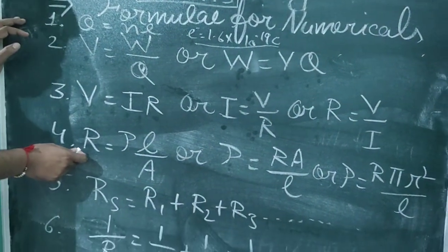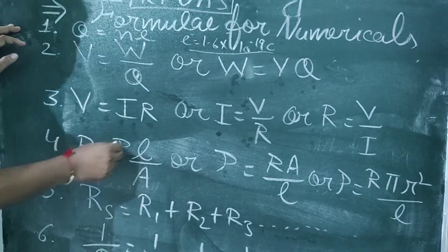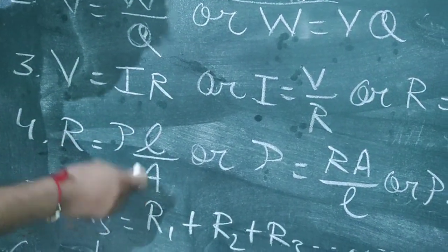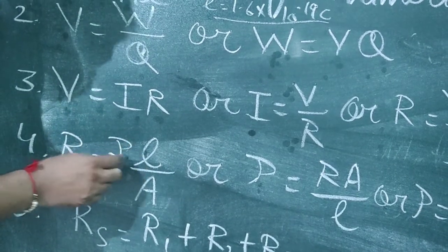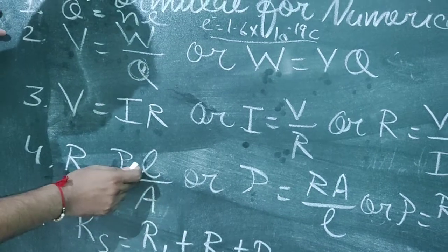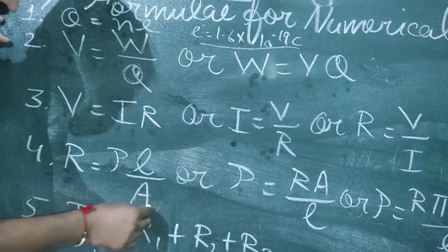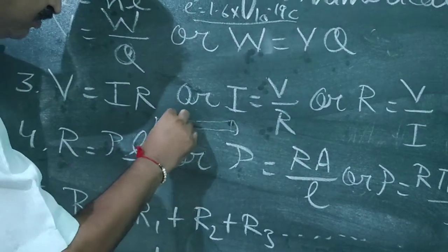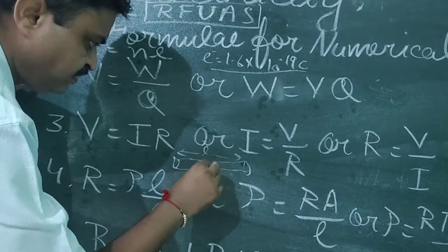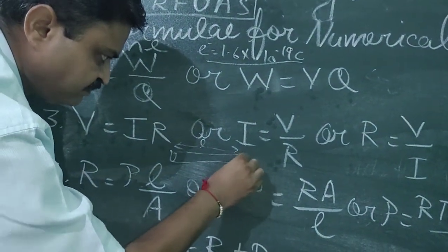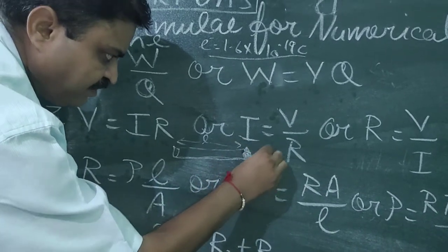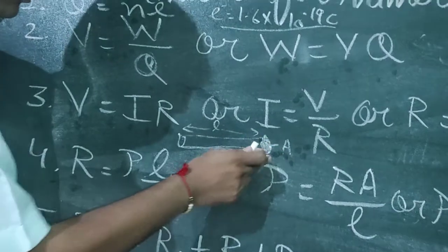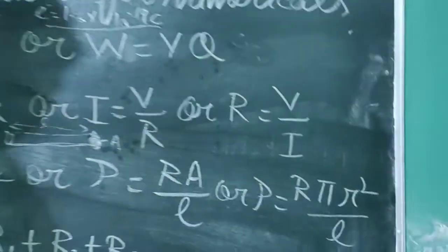Next is the resistance formula according to the factors of conductors: resistance R = ρL/A. Here rho (ρ) means resistivity, L means the length of the conductor or wire, and A means the area of cross-section. If we consider a wire, the length and cross-section are represented accordingly, and the formula for area A is π r².